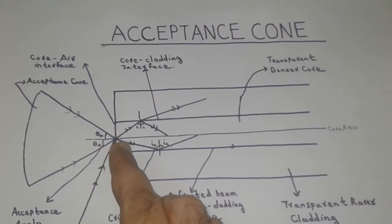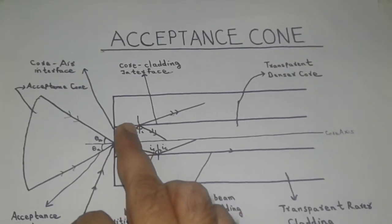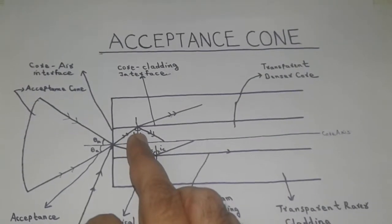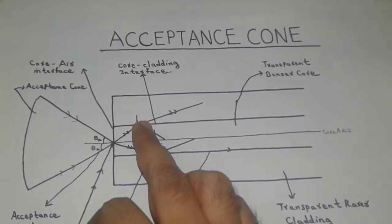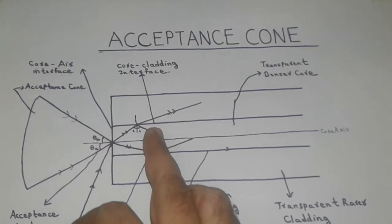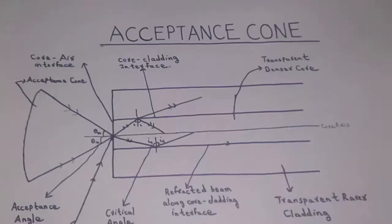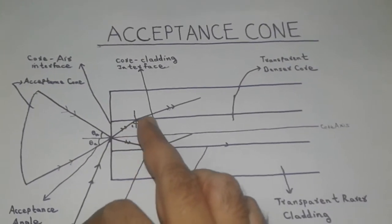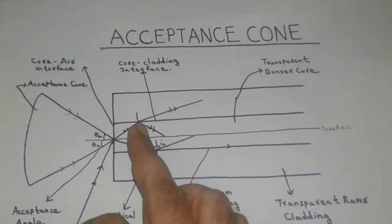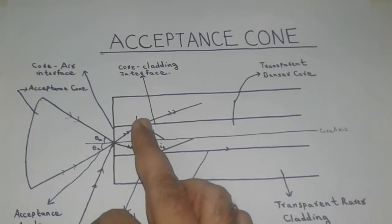In an optical fiber, when a light beam is incident on the core-cladding interface at an angle less than the critical angle, then a part of the beam is refracted into the rarer cladding and the other part is reflected back into the denser core. Hence, whenever the light beam is incident at the core-cladding interface at an angle less than the critical angle, they are always responsible for the fiber loss.